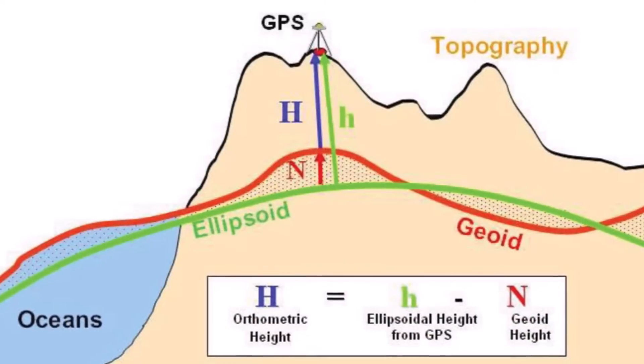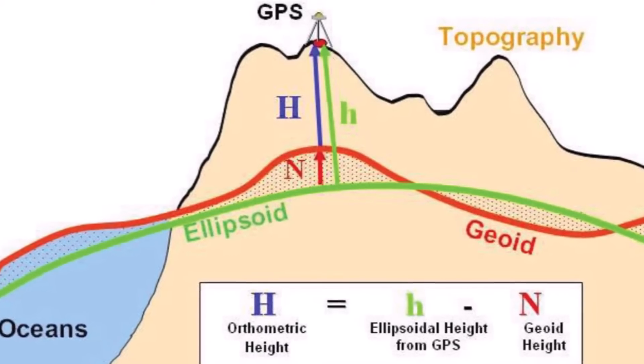Now you might have also heard about the geoid. The geoid is also a vertical datum. The geoid is a depiction of Earth's actual surface, or more precisely, the mean sea level. Both the ellipsoid and the geoid are vertical datums. Vertical datums are a reference plane from where heights can be measured. Now vertical datums are a whole new chapter, but they are all part of geodesy.